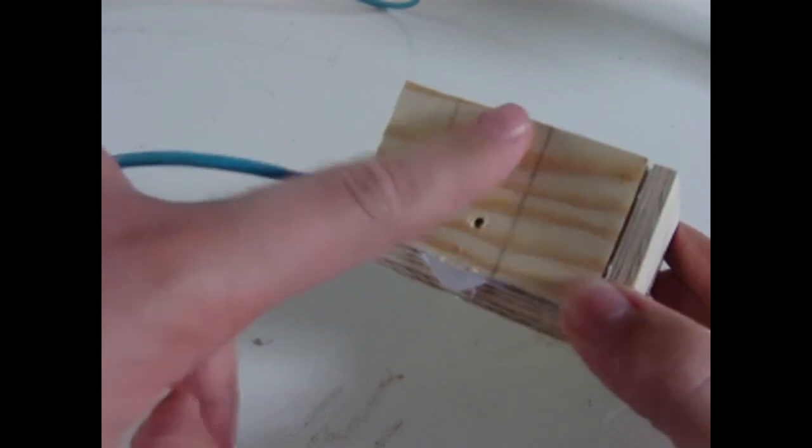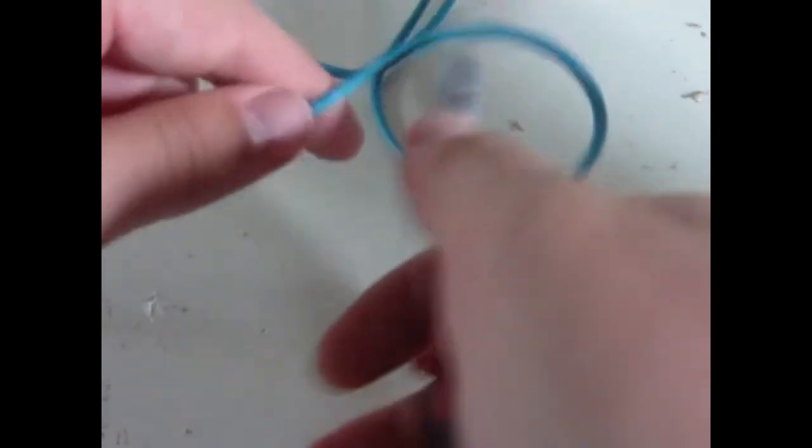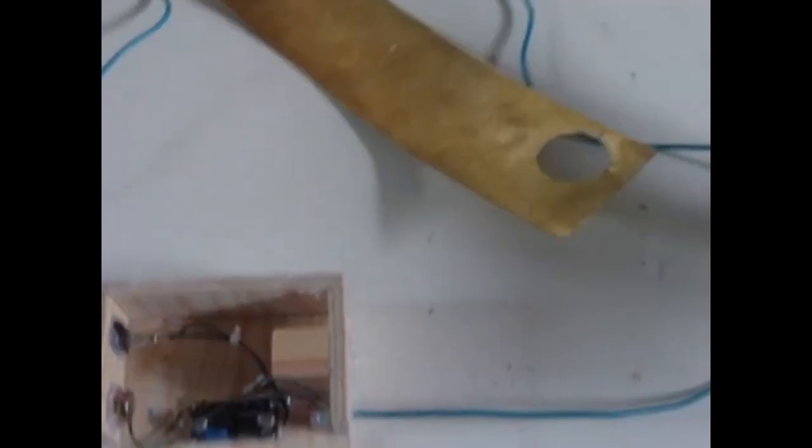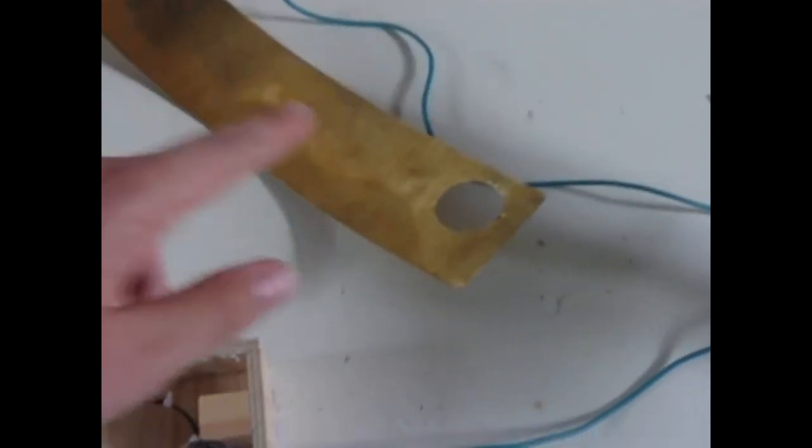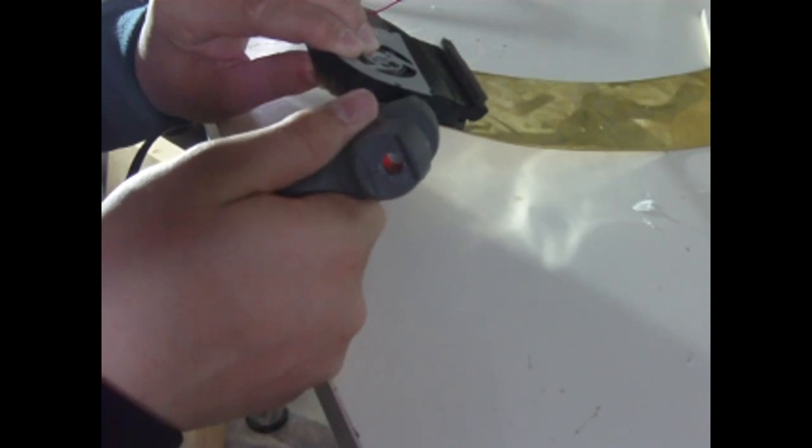I drilled two holes into the back of the lamp, both into the wood and brass sheet. Stupid me, I soldered the blue USB cable too early. Now I need to cut the cable in half. In the meantime, I will glue the PC fan to the brass sheet. I used hot glue for this operation.